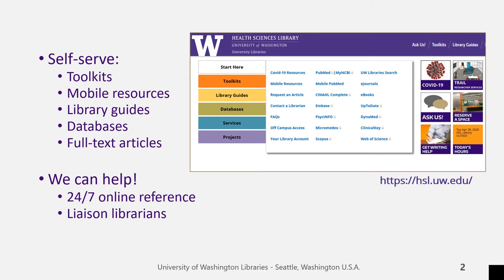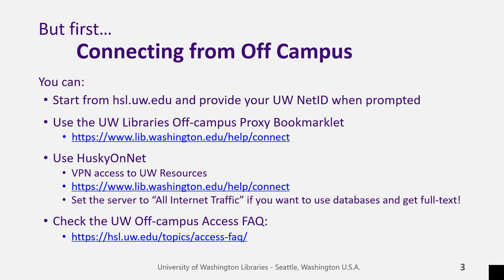To access any of these, head to the HSL website. Whether you're based in Seattle or elsewhere in the region, if you're off campus, you're going to need to take a step to connect. You can start at the Health Sciences Library website and log in when it asks for a login. Anything with a little gray lock symbol will require you to log in. If you'd rather start at the resource itself, you can use the off-campus proxy bookmarklet to log in and then go right back to the resource.